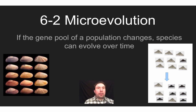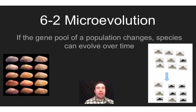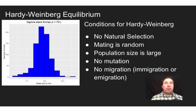Hello everybody, it's Mr. Matthew here again for honors biology video 6-2, and this is going to focus on microevolution. In this video we're going to talk about the conditions for setting up a gene pool, how that gene pool would stay in equilibrium or not change, and what happens if certain factors change — leading to small shifts in allele frequency within that population. We'll also do some calculations.